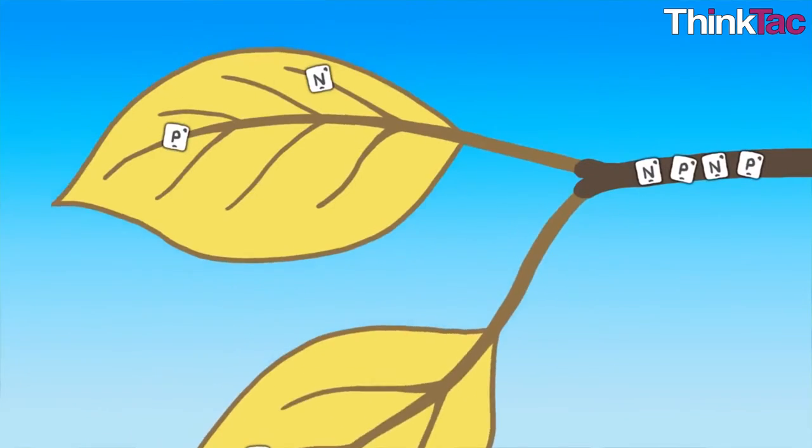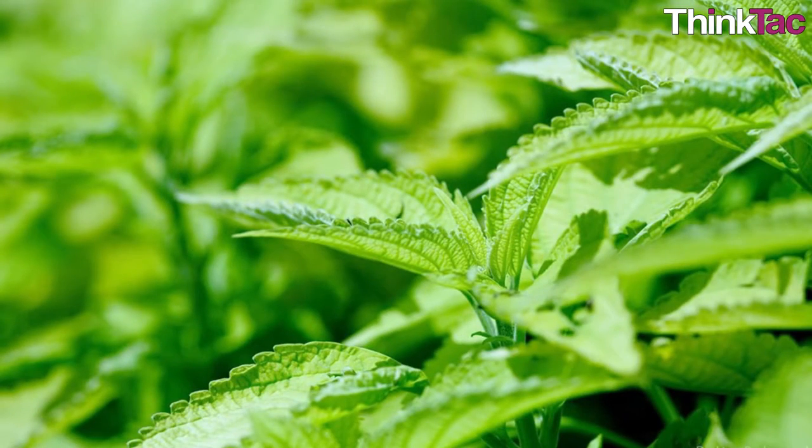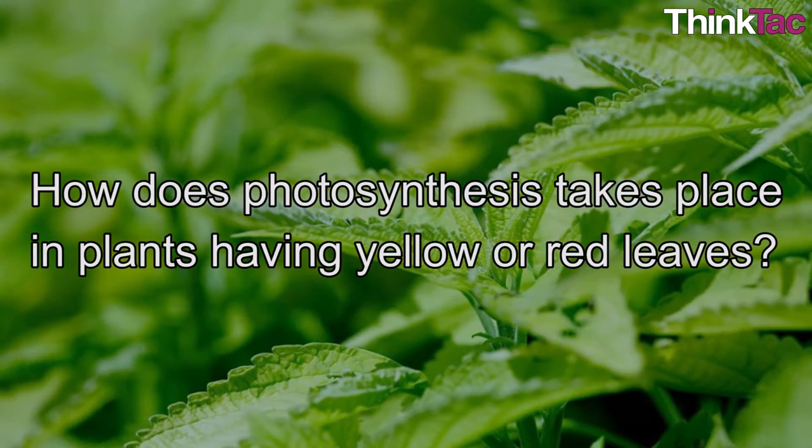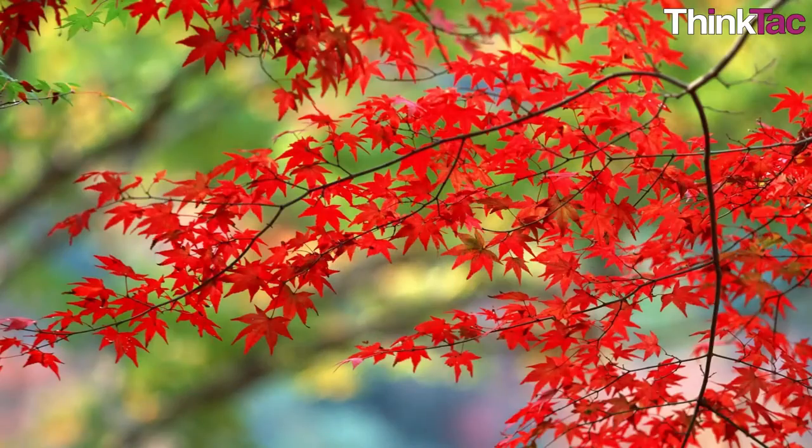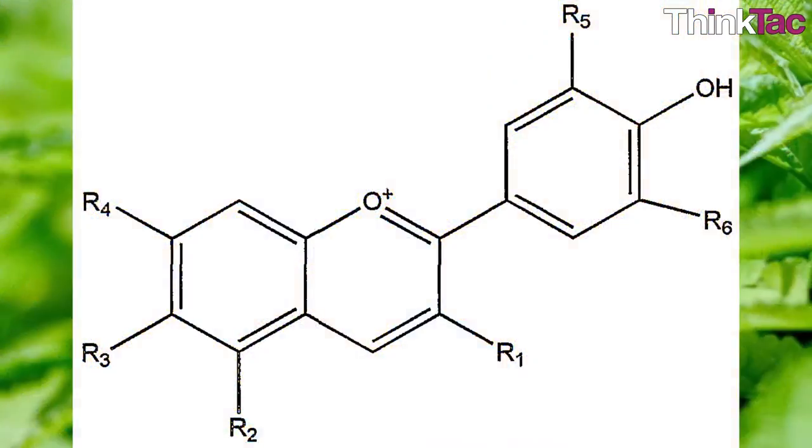Now one question will surely cross your mind that if this is all about chlorophyll and green plants, then how does photosynthesis take place in plants having yellow or red leaves? You have already read about the two pigments, chlorophyll and carotenoids. There is a third group of pigments known as anthocyanins.